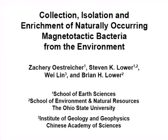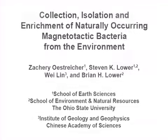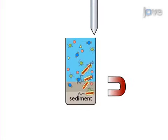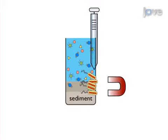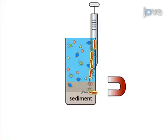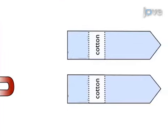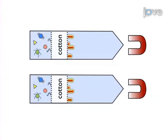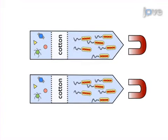The overall goal of this procedure is to isolate magnetotactic bacteria from a freshwater environment. This is accomplished by first collecting water sediment samples from the edge of a river or lake. The second step is to isolate magnetotactic bacteria contained within the environmental sample using a bar magnet. Next, the magnetotactic bacteria are enriched using a glass capillary racetrack and magnet.